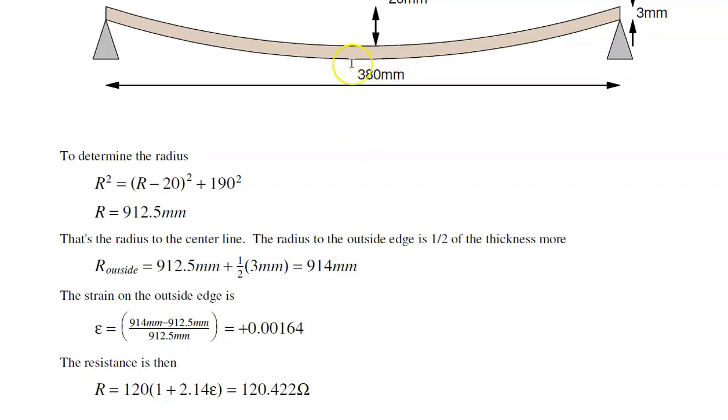Connect a strain gauge to the outer edge, and that resistance is going to go from 120 ohms to 120.4 ohms. Not a lot, but if you have an instrumentation amplifier, you can amplify that to convert that to 0 to 10 volts, which wasn't asked for, but you could.